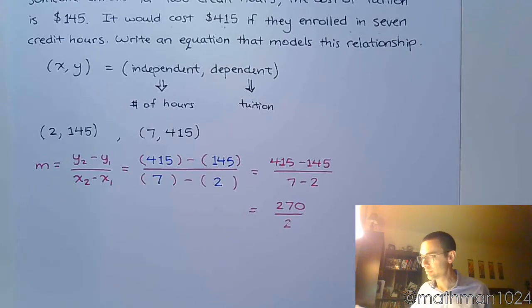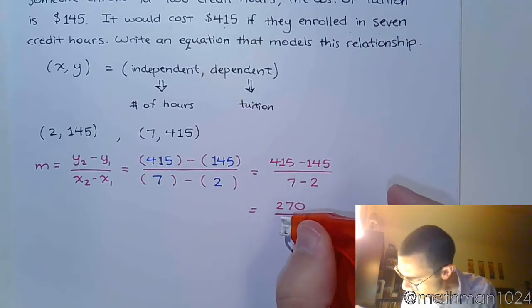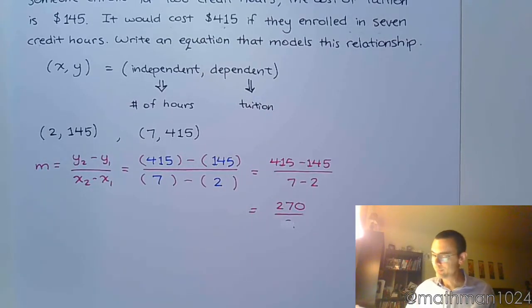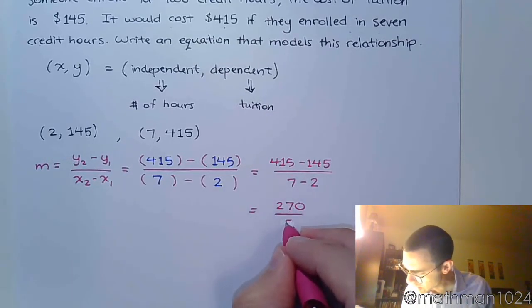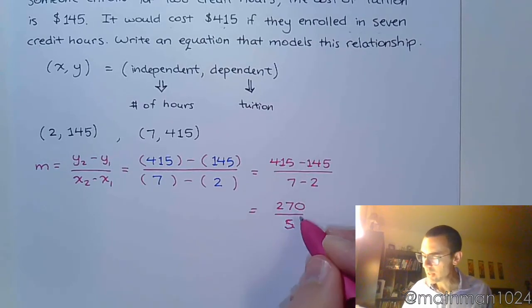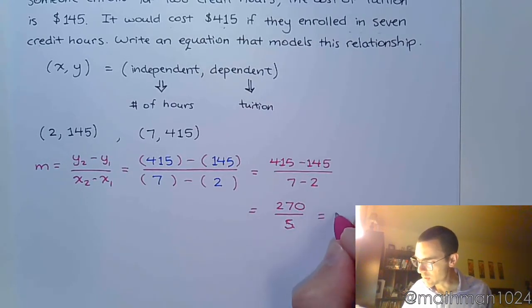5, why did I write 2? Has that ever happened to you guys? You say one thing, but you write something else. You can't even believe it happened. 7 minus 2 is 5. I think I was looking at the 2, and my brain just had an issue there. All right, so that means 270 over 5 to the division there is pretty simple. You get 54.